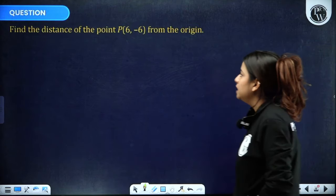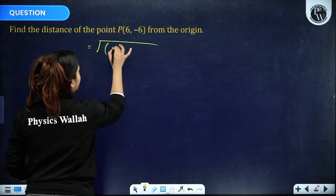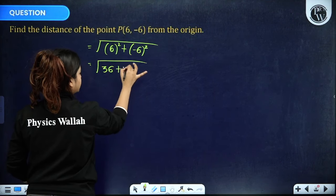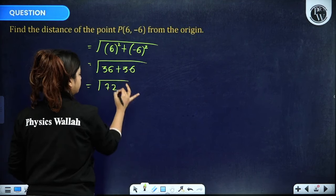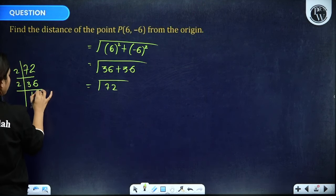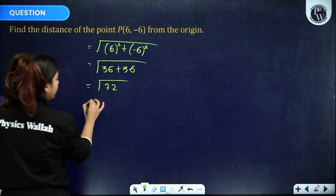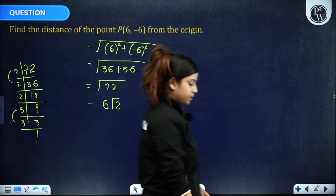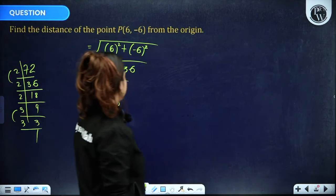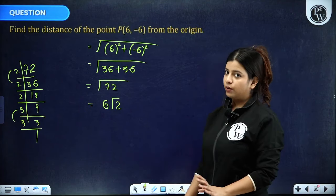Find the distance of point P(6, −6) from the origin. Distance = √(6² + (−6)²) = √(36 + 36) = √72. Prime factorizing 72: 2 × 36 = 2 × 2 × 18 = 2 × 2 × 2 × 9 = 2³ × 3². Pairing: we get 6√2. So the distance is 6√2.